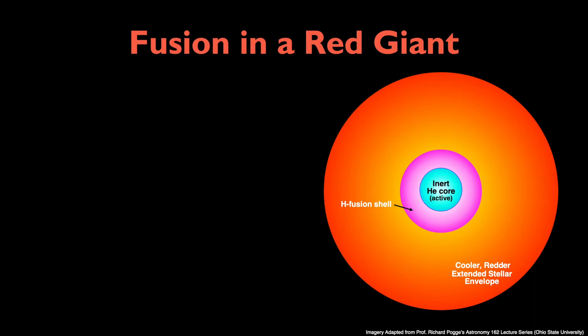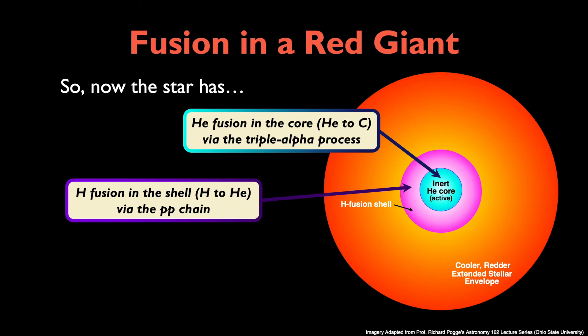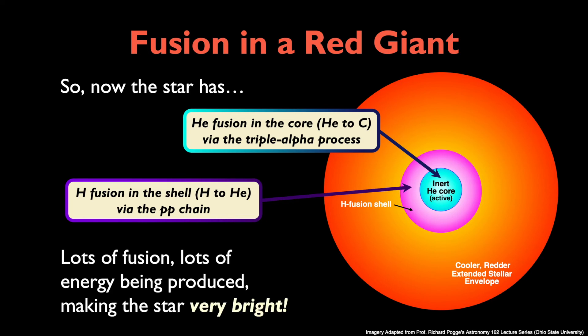So now the red giant star has different types of fusion taking place in different regions within it. There's helium fusion in the core via the triple alpha process, where the temperature is 100 million Kelvin, and carbon is being created. And there's hydrogen fusion in the shell surrounding the core, where the temperature is 10 million Kelvin, and more helium is being created. With so much fusion, more than before, lots of energy is being produced, making the star very bright.